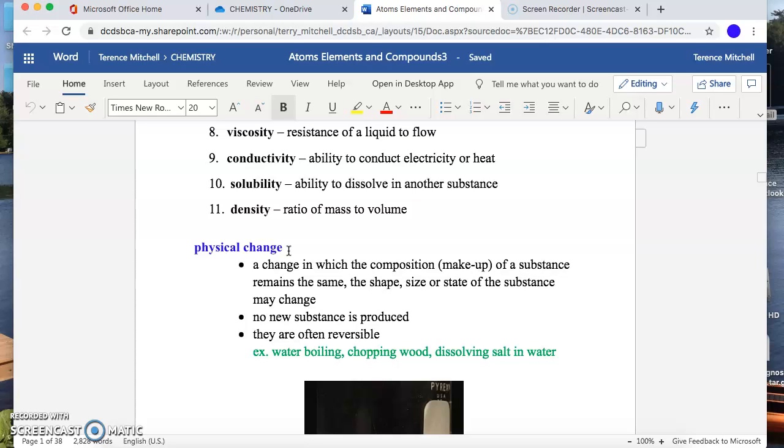We just talked about physical change. This is when we physically change something. If you recall, back in class I took a piece of paper and ripped it in half. That's a physical change. When I rip that piece of paper in half it remained paper, I just had two pieces of smaller paper. That's what this line is talking about right here. It's a change in which the composition or makeup of the substance remains the same, but the shape, size, or state may change.